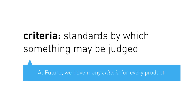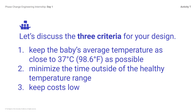Criteria — standards by which something may be judged. Do you remember the word criteria from the video? The engineering problem you are working on for Futura will need to meet certain criteria to ensure your designs are successful. Criteria are the things you must consider and test to evaluate whether your design or project is successful. The three criteria for your design are: 1) keep the baby's average temperature as close to 37°C as possible; 2) minimize the time outside of the healthy temperature range; and 3) keep costs low. You will also read the request for proposals after hours, which reviews the criteria as well.